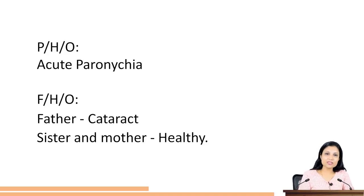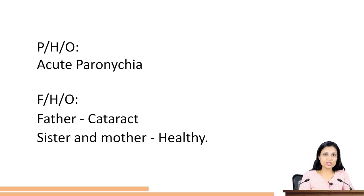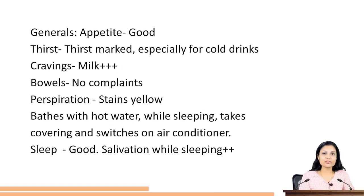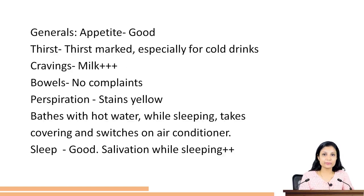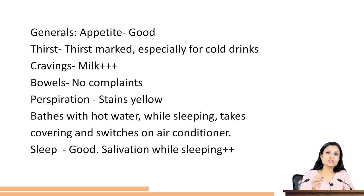Looking at his past history, there was a history of acute paronychia a few years back, which was resolved with allopathic medicines. There is a family history as well - the father has cataract; however, the sister and mother are completely healthy. Looking at his generals, he is a person of good appetite with marked thirst, especially for cold drinks. He has an intense craving for milk - almost four to five glasses a day. His perspiration is peculiar: it stains his shirts yellow.